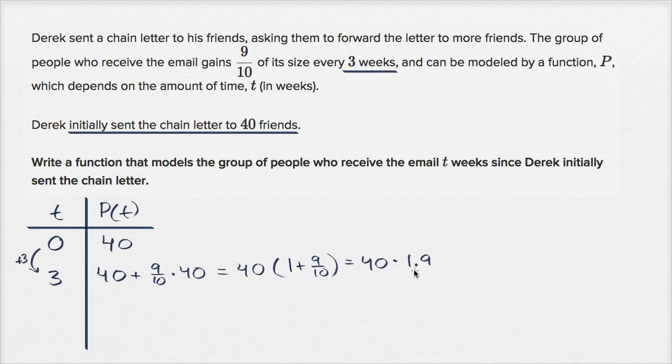Or another way of thinking about it, after three weeks, we've grown 90%. That's another way of saying that the number of people who receive the email gains 9 tenths of its size. You could say the group of people who receive the email grows 90% every three weeks.